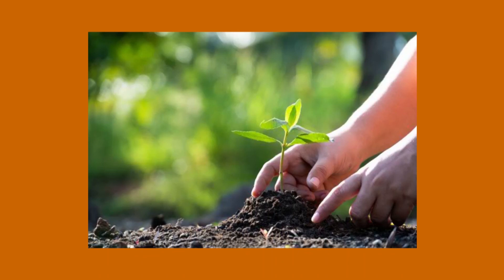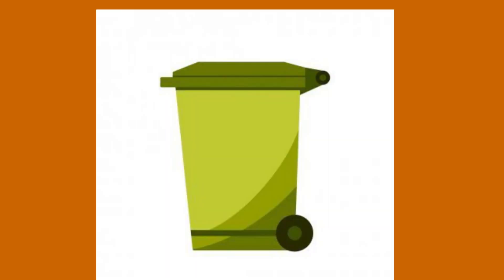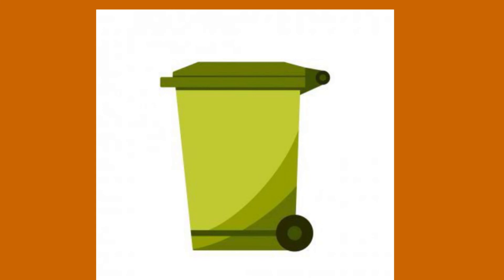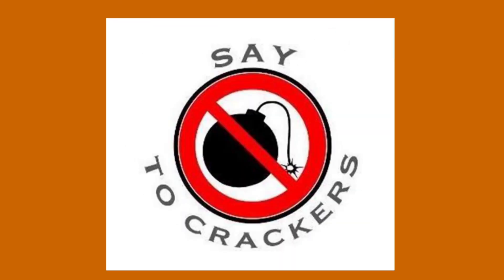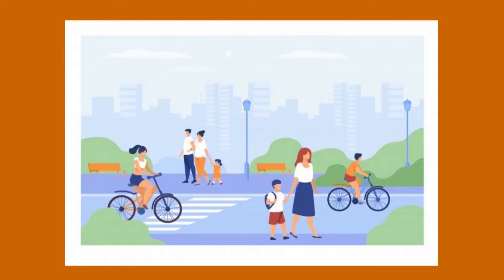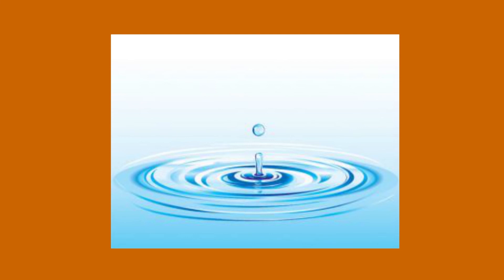How to save our environment. Grow more trees — they keep the air clean. Throw waste in covered bins. Do not use polythene bags; use jute, cloth, or paper bags instead. Say no to firecrackers. Walk or cycle short distances. Do not waste paper, as it is made by cutting trees.